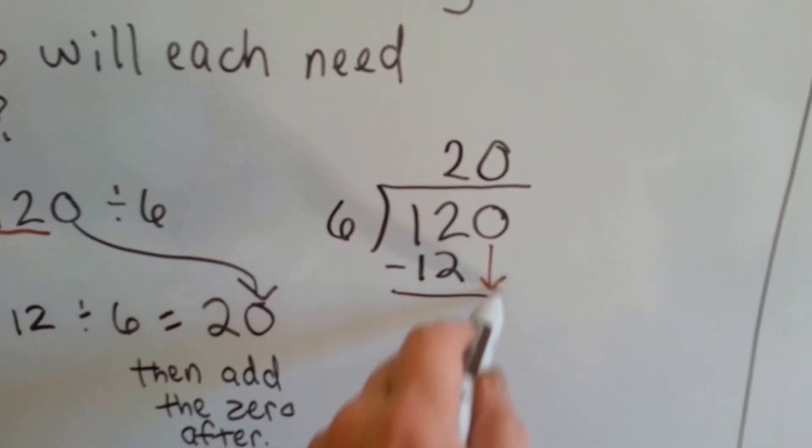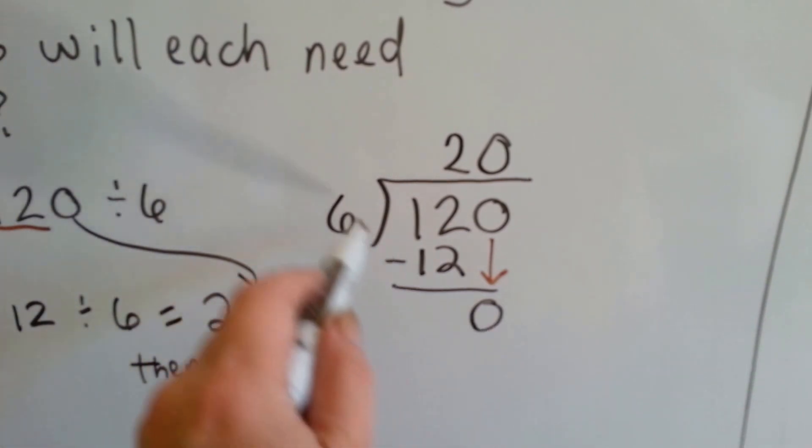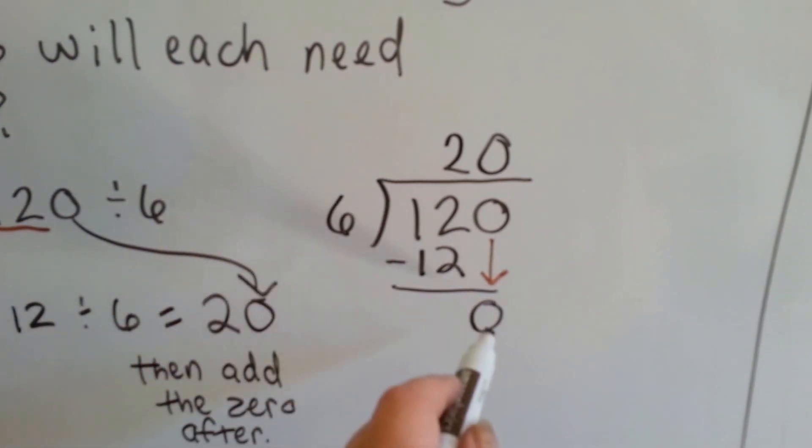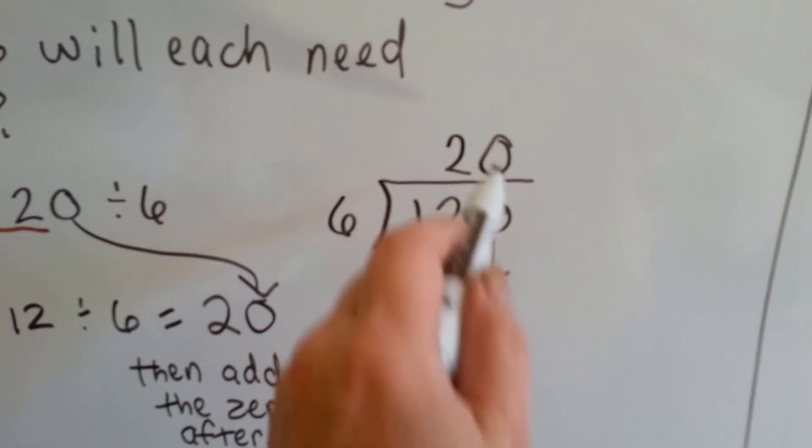We do our subtraction and we get 0. It's this 0's turn to come down, but it can't fit into 0, can it? 6 can't fit into 0, so we just put a 0 up there.